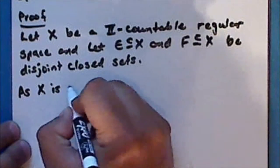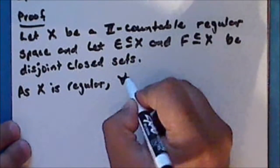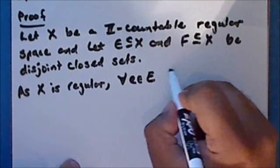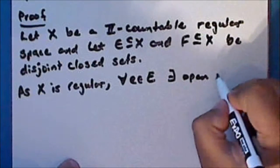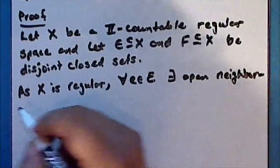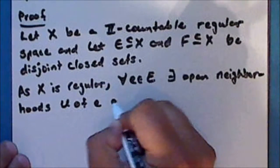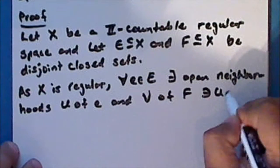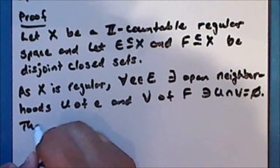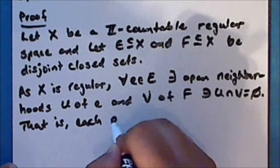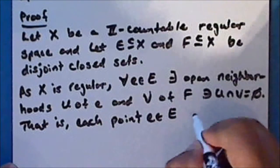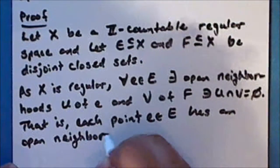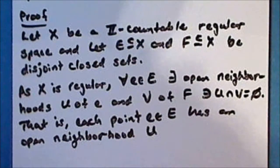As the space is regular, for every point e in the closed set E, notice that the set F is a closed set not containing it. So there exist open neighborhoods U of the point e and V of the closed set F such that the intersection of U and V is empty. That is, each point e in E has an open neighborhood U not intersecting F.